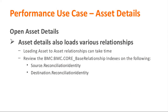Another common use case is asset details. In some customer instances, opening asset details was slow. When you open asset details, various relationships for the assets are loaded. One relationship that has been noticed taking time is the asset-to-asset relationship. You need to make sure you have the following indexes on the base relationship table: source reconciliation ID and destination reconciliation ID. For most cases they should be there out of the box, but once the right indexes were added, asset details loaded pretty fast.